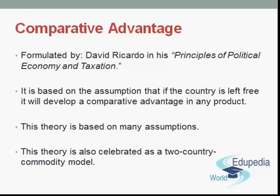In a nutshell, the doctrine of comparative cost maintains that if trade is left free, each country in the long run tends to specialize in the production and export of those commodities in whose production it enjoys a comparative advantage in terms of real costs, and to obtain by importation those commodities which could be produced at home at a comparative disadvantage in terms of real cost, and that such specialization is to the mutual advantage of the countries participating in it.